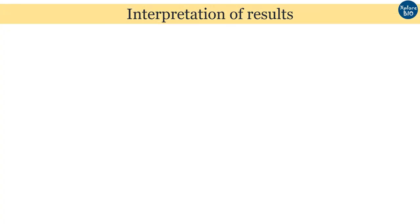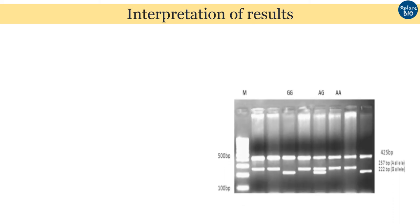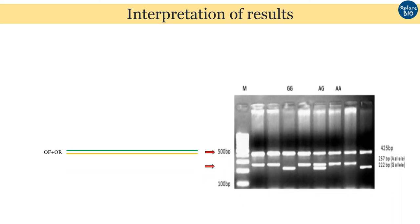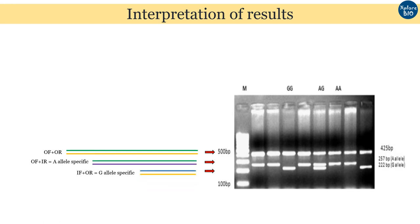Now coming to the interpretation of results. If 2 bands are visible in an individual, it means the first band is from the outer primers and the other band is allele-specific — clearly seen on the gel as homozygous G or homozygous A. But if 3 bands are visible, it means the individual is heterozygous, meaning both alleles are present in one individual. Homozygous means both DNA copies have the same sequence, while heterozygous means each DNA copy has a different sequence. This heterozygous situation can be seen in the gel as A/G, shown in the fifth lane.